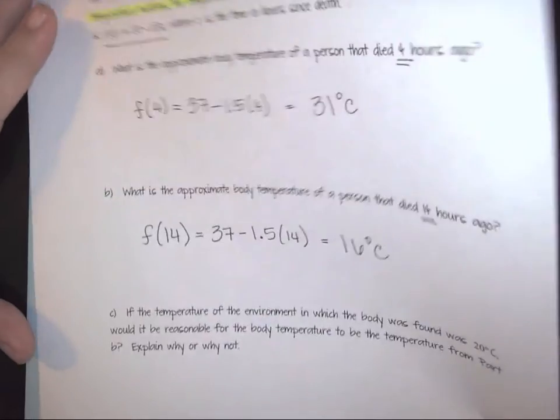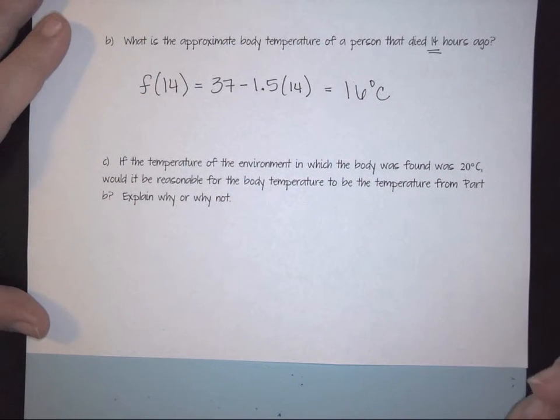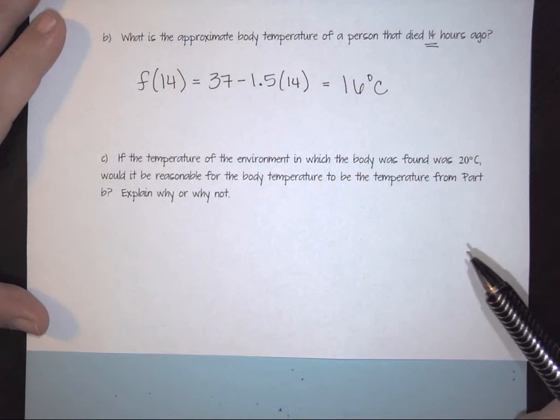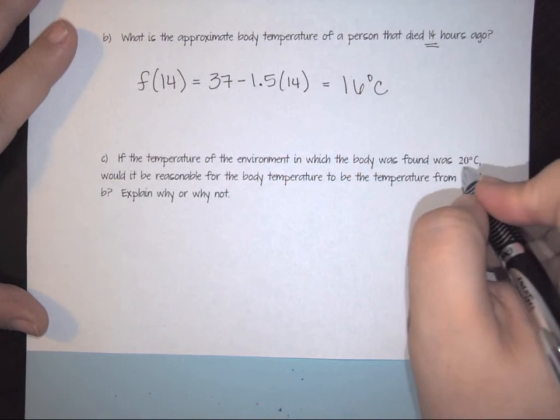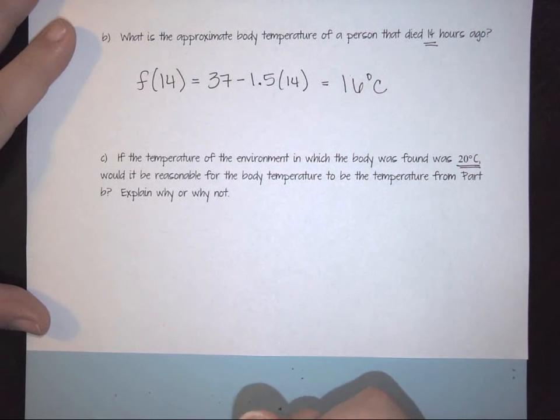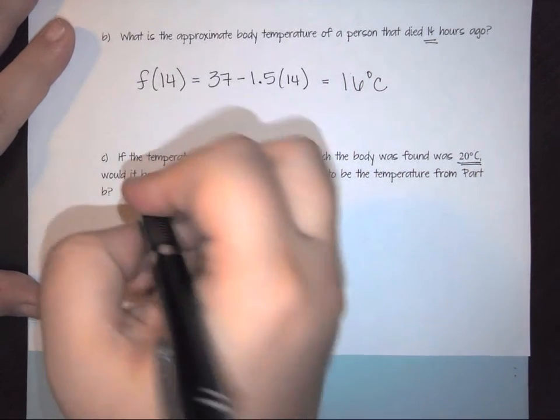Now the last thing that forensic scientists will usually ask themselves is does that temperature make sense? So if the temperature of the environment in which the body was found is 20 degrees Celsius, would it be reasonable for the body temperature to be the temperature from part B? So what is this asking?